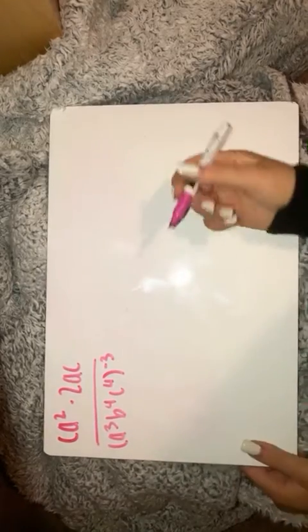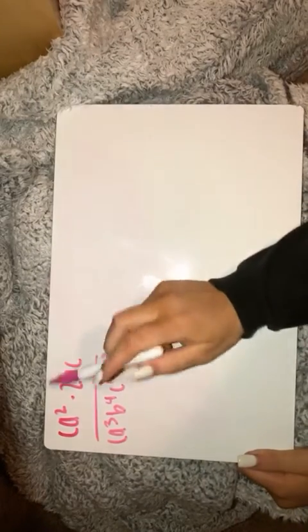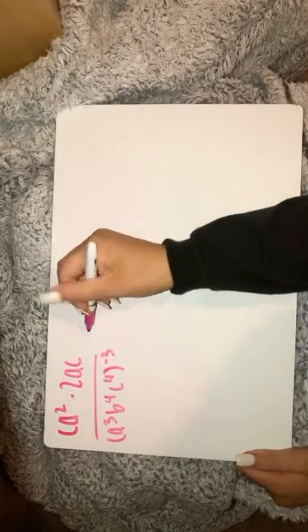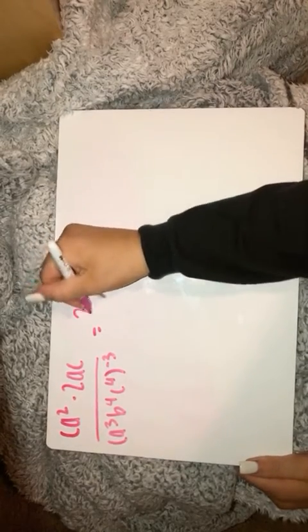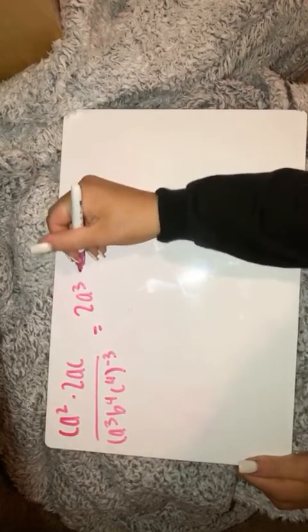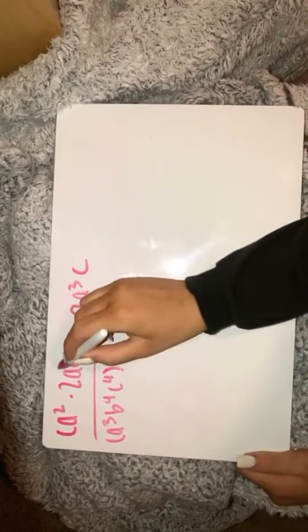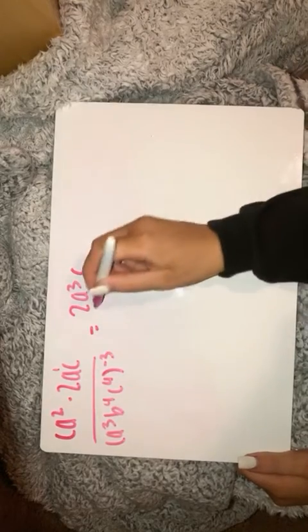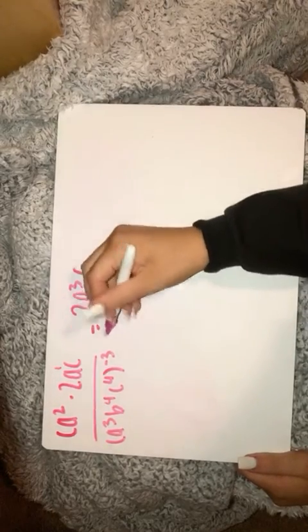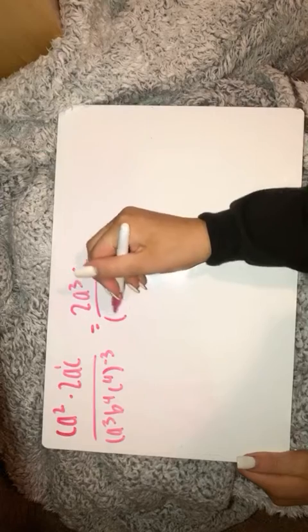Okay, so first we're going to combine like terms, which is up here at the top. So you're going to end up with 2a to the third c because you have a 2 here and then this has an imaginary 1 and so that equals 3. You have the leftover c and then you're going to keep this original problem right here.